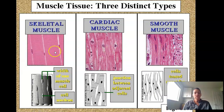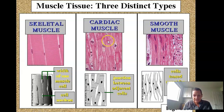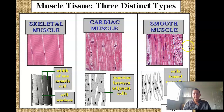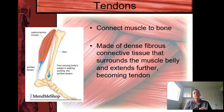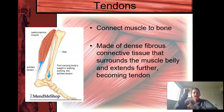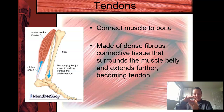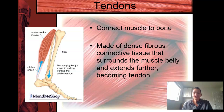Here are the three types of muscle tissue you would see under a microscope — you should be able to identify skeletal, cardiac (you can see the intercalated discs), and smooth muscle. Tendons connect muscle to bone. To remember the difference: bone to bone is ligaments — it makes an L for ligament. A T-bone steak has meat (muscle) attached to bone — T stands for tendon, made up of dense connective fibers that surround the muscle belly and extend further to become the tendon.